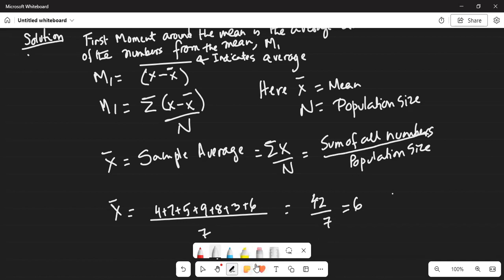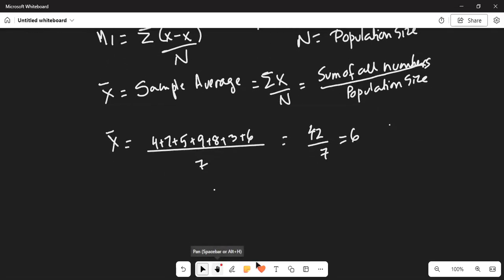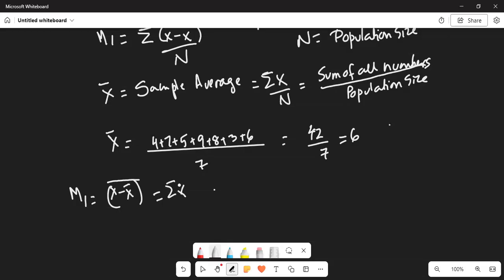So now I have to calculate the first moment around the mean. Please do not quit. I will give you some important tip at the end of this program. So M1 is x minus x-bar in parenthesis. Upper line indicates average, which is sum of all the deviations of all the numbers from the mean.